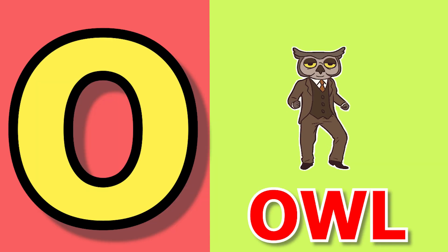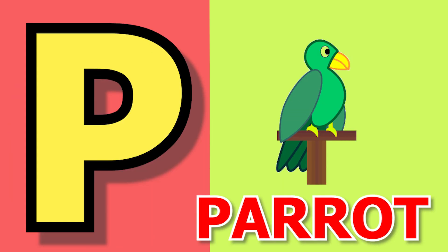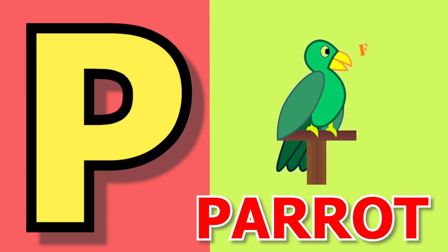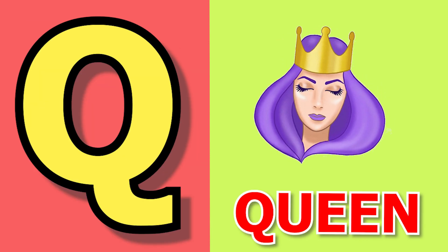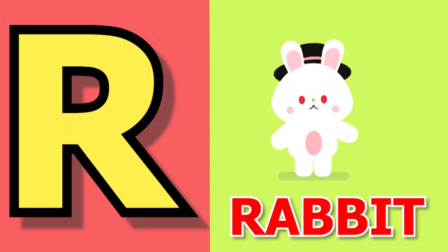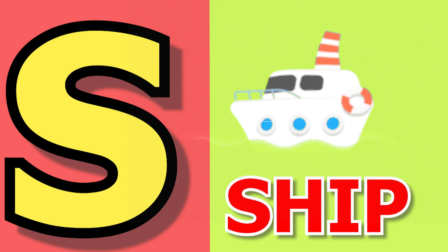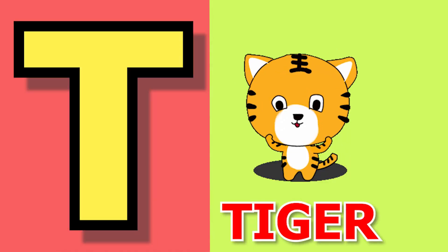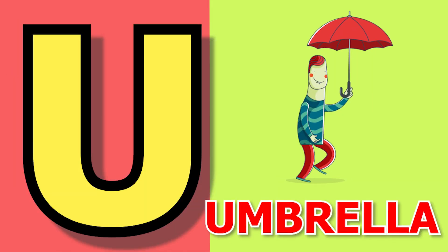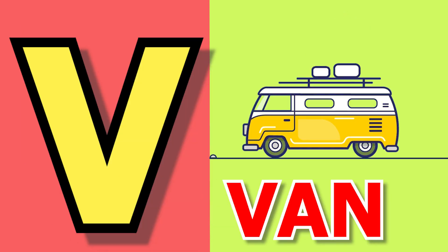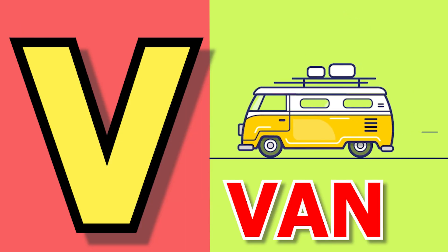O for owl, P for parrot, Q for queen, R for rabbit, S for sheep, T for tiger, U for umbrella, V for van.